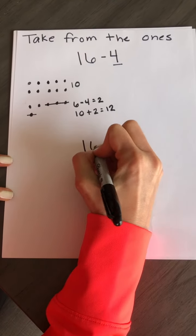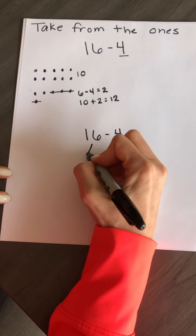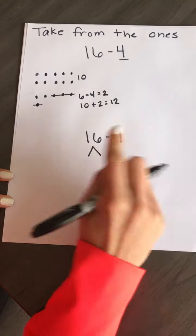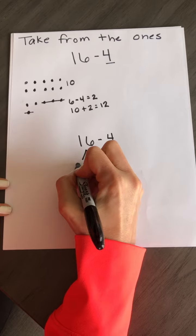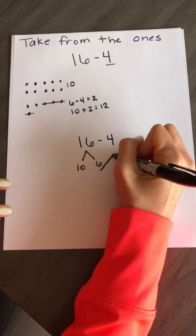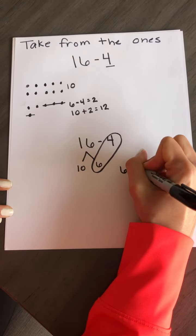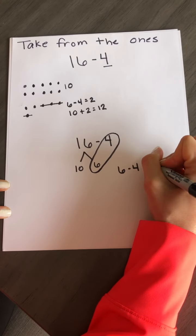Some of you might have practiced this way where you are breaking apart your 16 and you're breaking it into 10 and 6 ones. Here you see that you can do 6 ones minus 4 ones and you write it which equals 2.